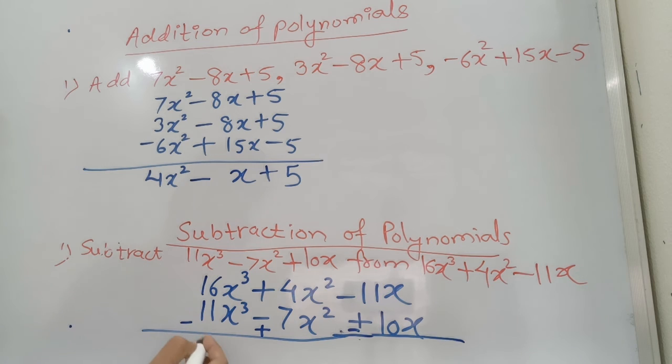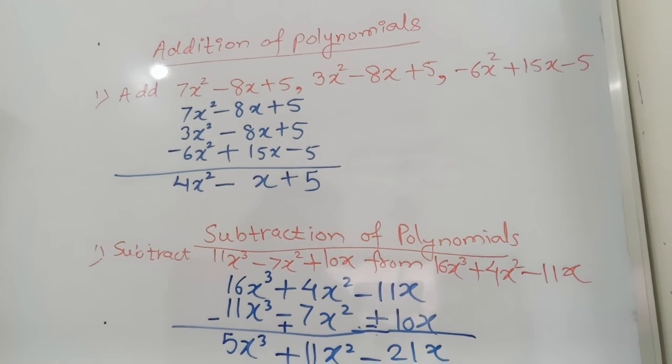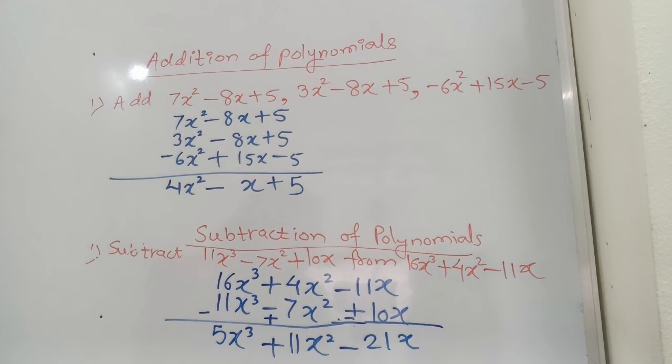Now so 16 minus 11 will give you 5x³, plus 4 plus 7 will give you plus 11x², and minus 11 minus 10 will give you minus 21x. So in this way you can get subtraction of polynomial as well as addition of polynomials.